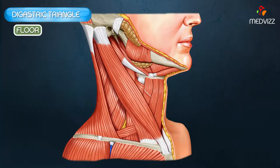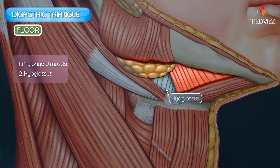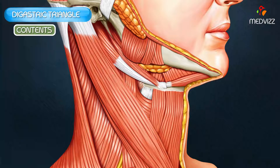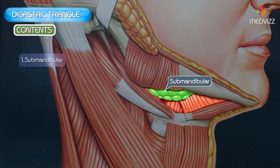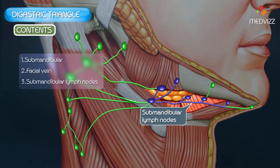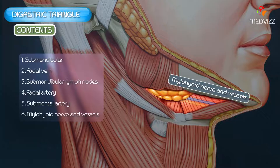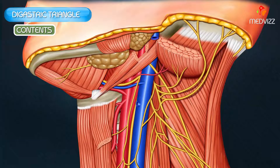The floor of the digastric triangle is formed by the mylohyoid muscle anteriorly, the hyoglossus muscle posteriorly, and a small part of the middle constrictor muscle of the pharynx. In the anterior part of the triangle, structures superficial to the mylohyoid include the superficial part of the submandibular salivary gland, the facial vein, and submandibular lymph nodes. The facial artery is deep to these. Other structures include the submental artery, mylohyoid nerve and vessels, and the hypoglossal nerve.